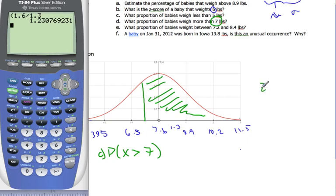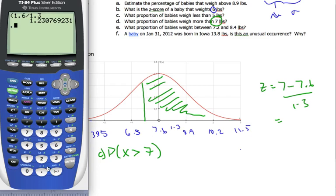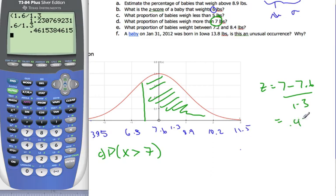Well, I'm going to calculate my z-score. Which is 7 minus the mean of 7.6 over 1.3. Which will be 0.6 divided by 1.3. Which is 0.4615.